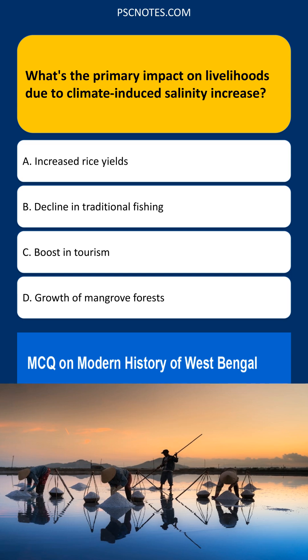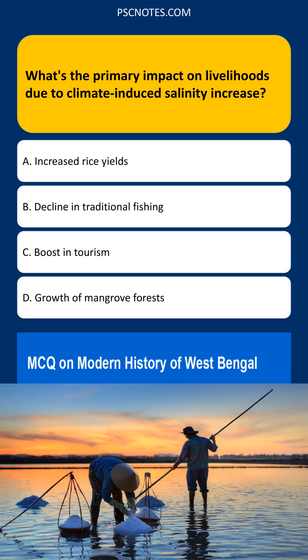Increased rice yields is incorrect because rice cultivation relies on freshwater. Salinity increase renders land unsuitable for rice farming.